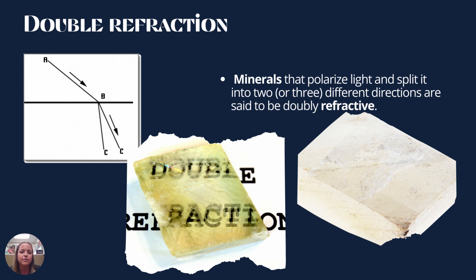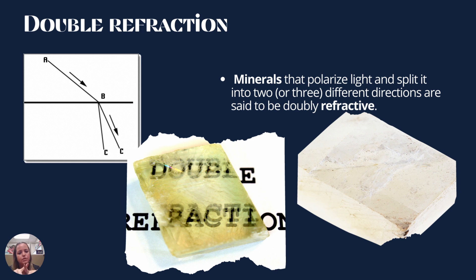Then we have double refraction. Some minerals will polarize light and split it into two. The diagram on the left shows light coming in, and then as it hits the mineral, the light will split into two different rays, creating a double effect — like you're seeing double. There in the middle is a piece of calcite going over words, and you can see there are basically two words stacked on top of each other. That is the double refraction through that mineral, and it is very particular to calcite and a few other minerals.